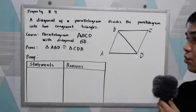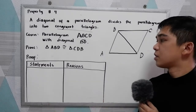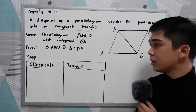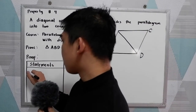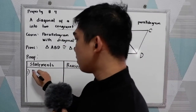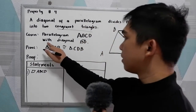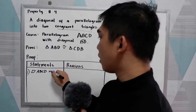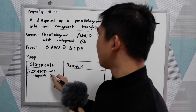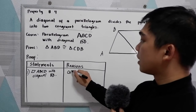We're going to use the two-column proof — the statement and the reasons. So of course, in our proving, first we write the given. Our given is: parallelogram ABCD with diagonal BD. That is our reason: given.